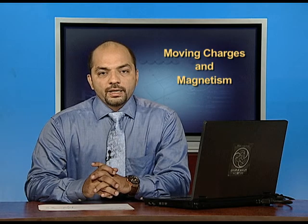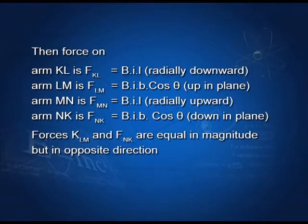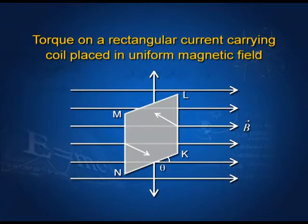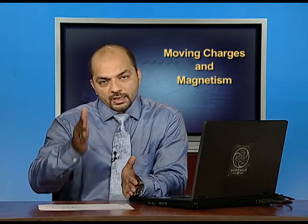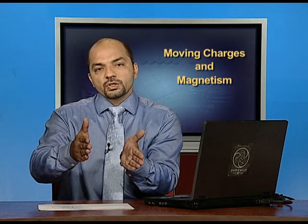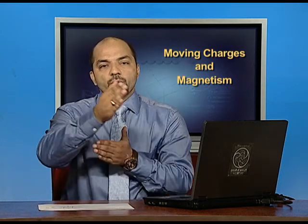From this situation, it is very clear that forces F_LM and F_NK are equal in magnitude but in opposite directions, so they cancel each other. Whereas the forces F_KL and F_MN are equal in magnitude and opposite in direction, but these two forces form a couple. One force is acting downward, the second force is upward, and together they try to rotate the coil.